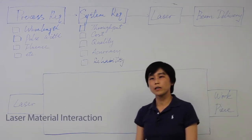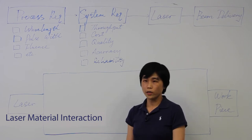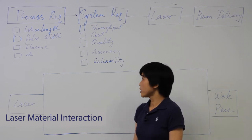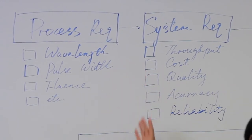Typically the process requirement is defined by the fundamental physics, how the laser photons interact with the material, and usually the critical parameter includes wavelength, pulse width, fluence, and so on.